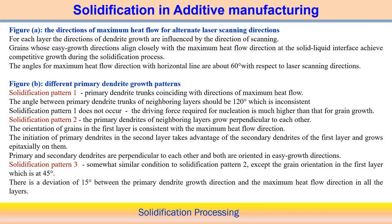The direction of maximum heat flow alternates with laser scanning direction, represented by the yellow vector. For each layer, dendritic growth is influenced by the direction of scanning. In unidirectional scanning the growth direction is the maximum heat flow direction, and grains try to follow the easy growth direction closely aligned with the maximum heat flow direction at the solid-liquid interface.